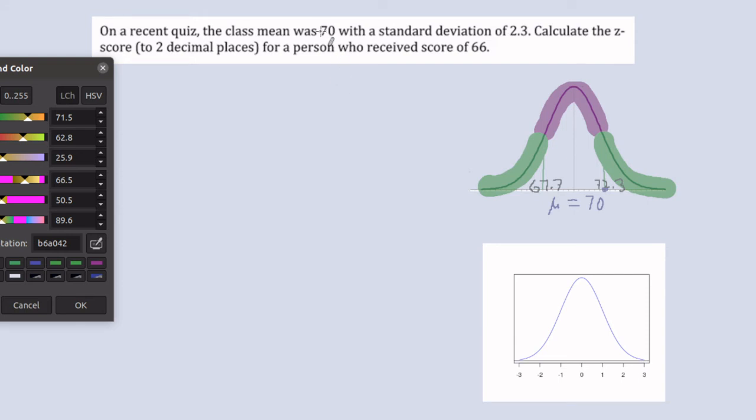Now what we're asked to find is the z-score for a person who received a score of 66. So on this number line 66 would be a little bit above here, so right around in here somewhere is where 66 is.